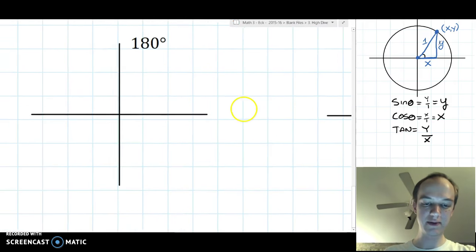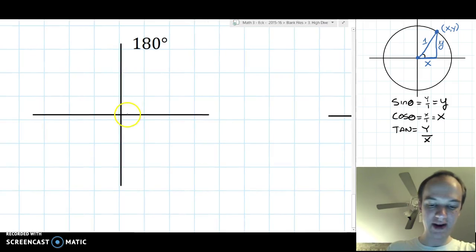Next, 180. At 180, if this is our initial side, we rotate a full half turn all the way over to here.